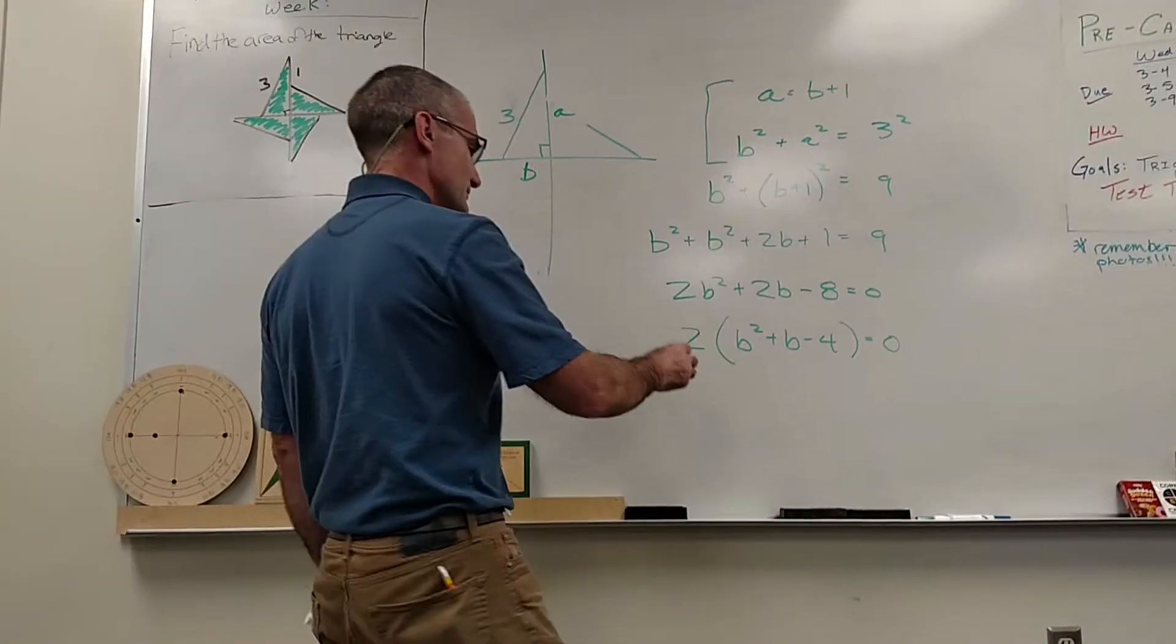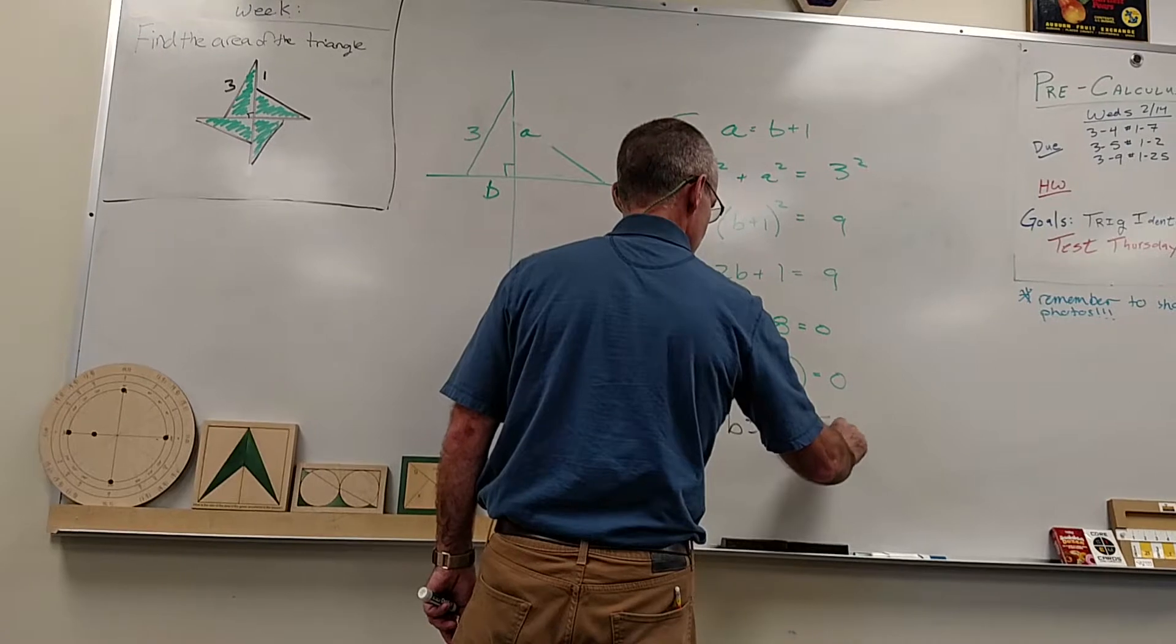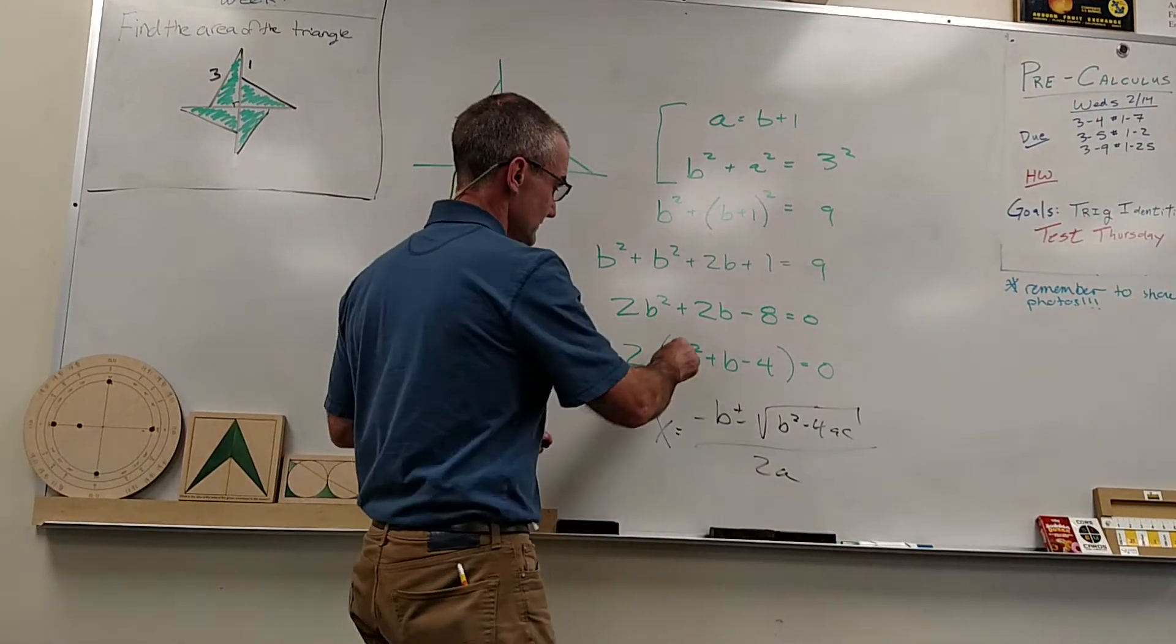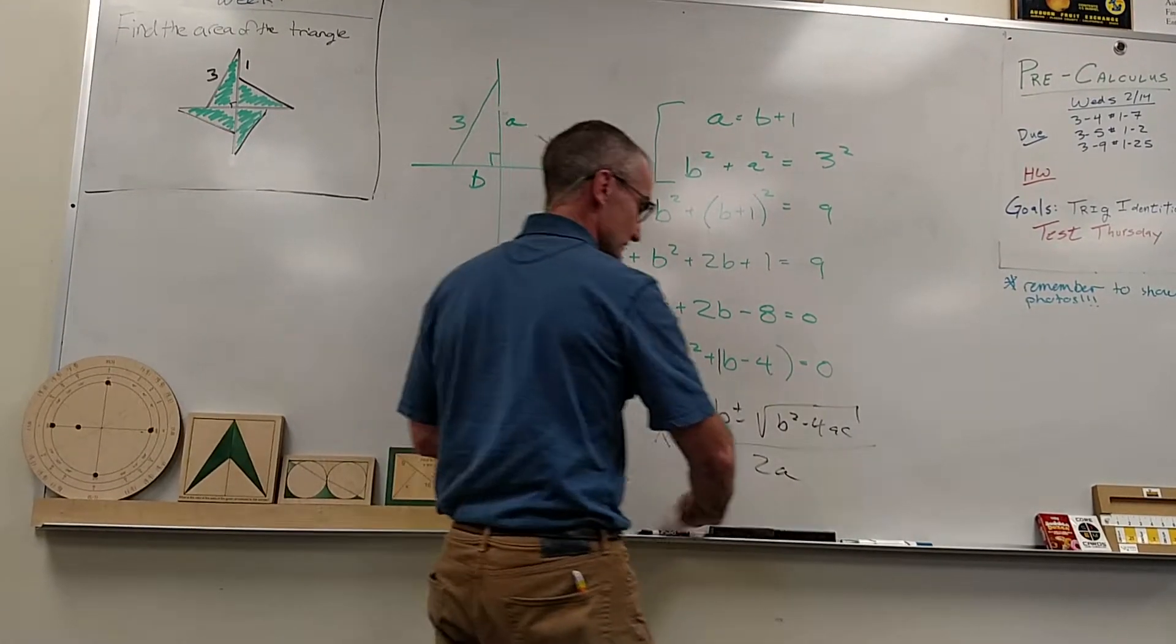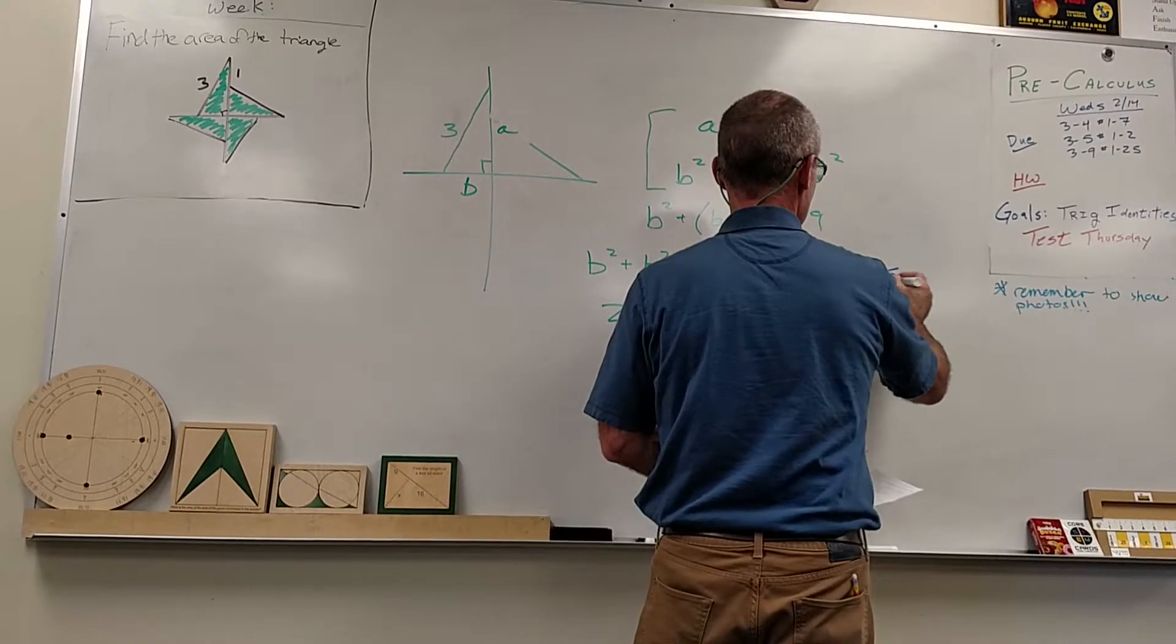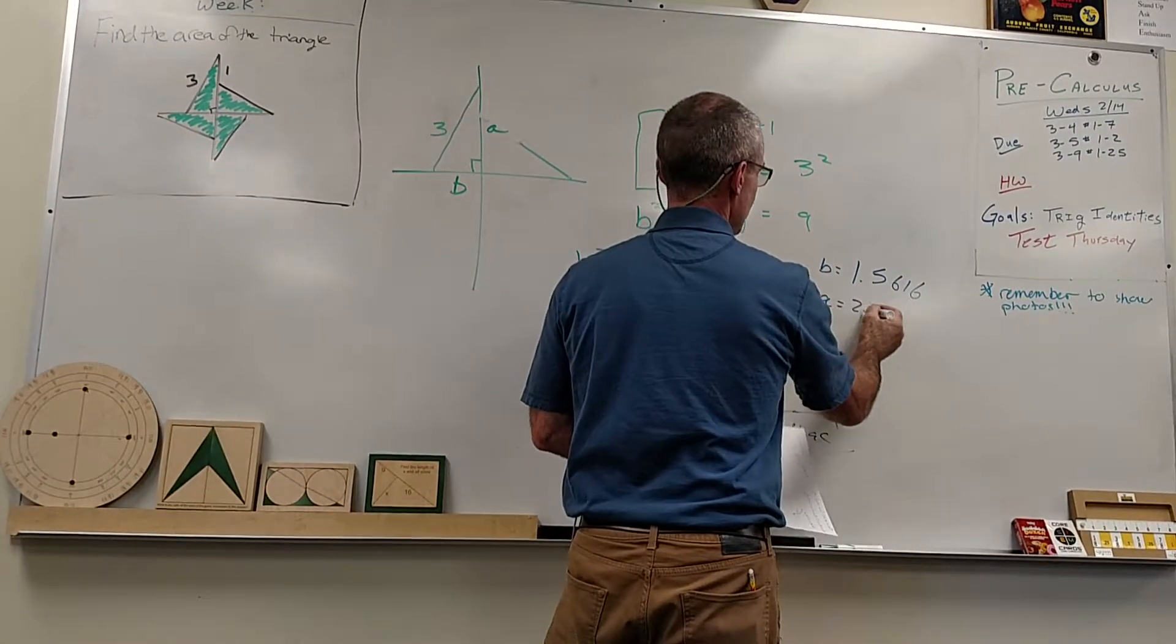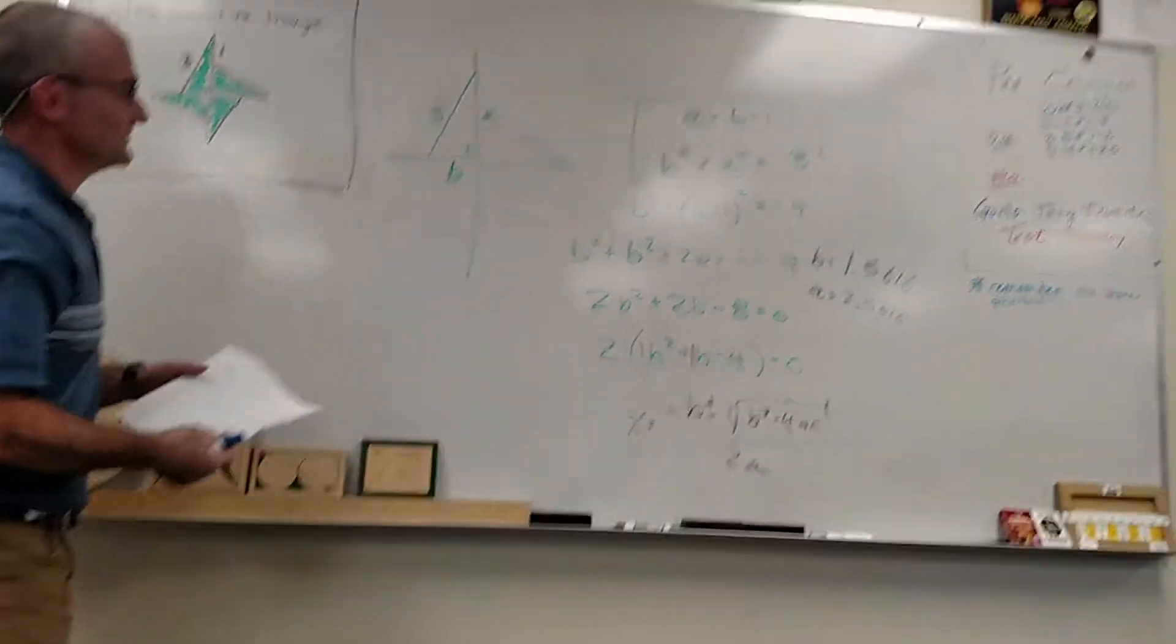So what I do is I actually use the quadratic equation. So X is equal to negative B plus or minus B squared minus 4AC all over 2A. And I take those values of one for A, one for B, and negative four for C. And I solve for X, and I get a value for X of 1.56, 1.5616. And that's going to be my value for B. So my value for A is one plus that, 2.5616. So using the quadratic equation, I can solve for these legs and find the area of the triangle.